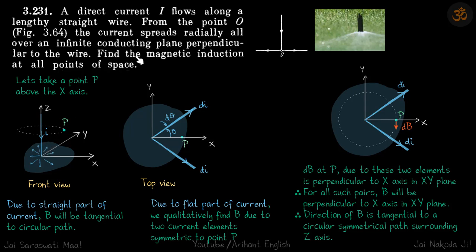We are supposed to find the magnetic induction at all points in space. First, let us take a point P above this plane, above the x-y plane. Later we'll think what will happen below the plane. We have taken one point P above the plane and above the x axis also. We have randomly taken any direction as x.